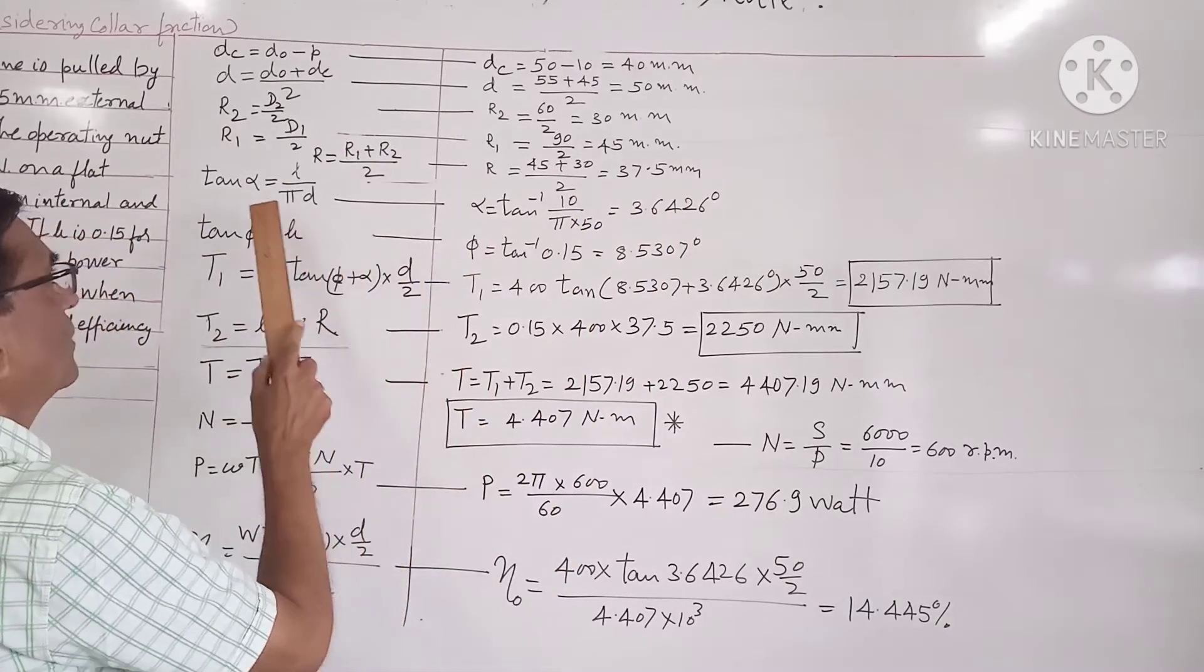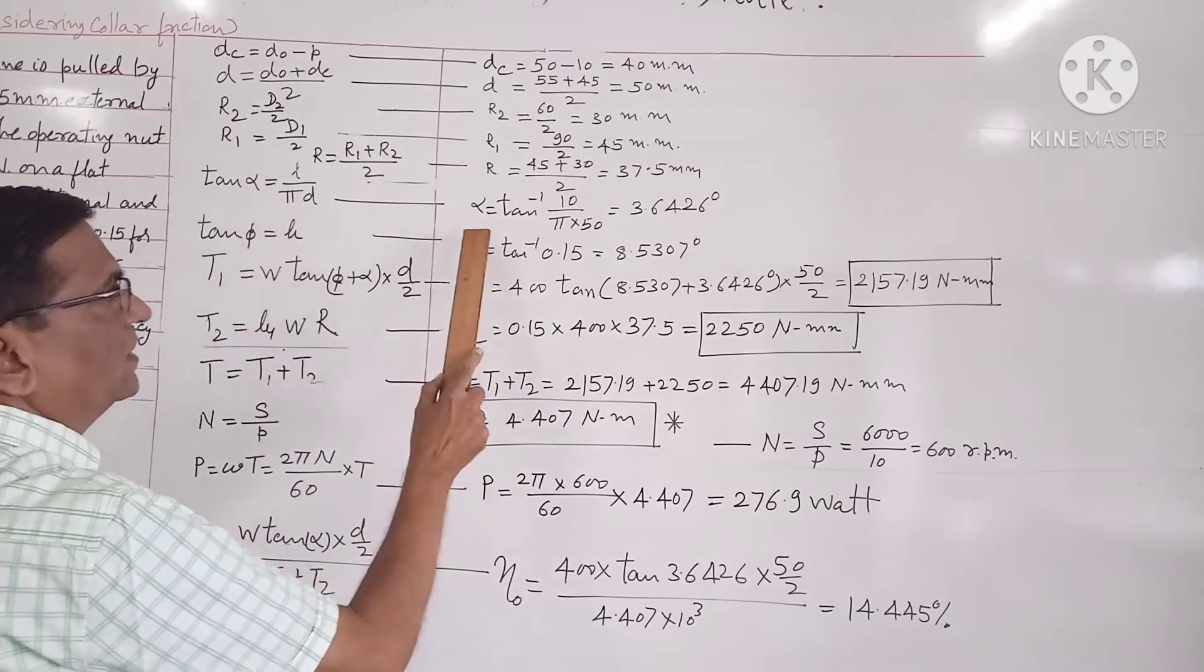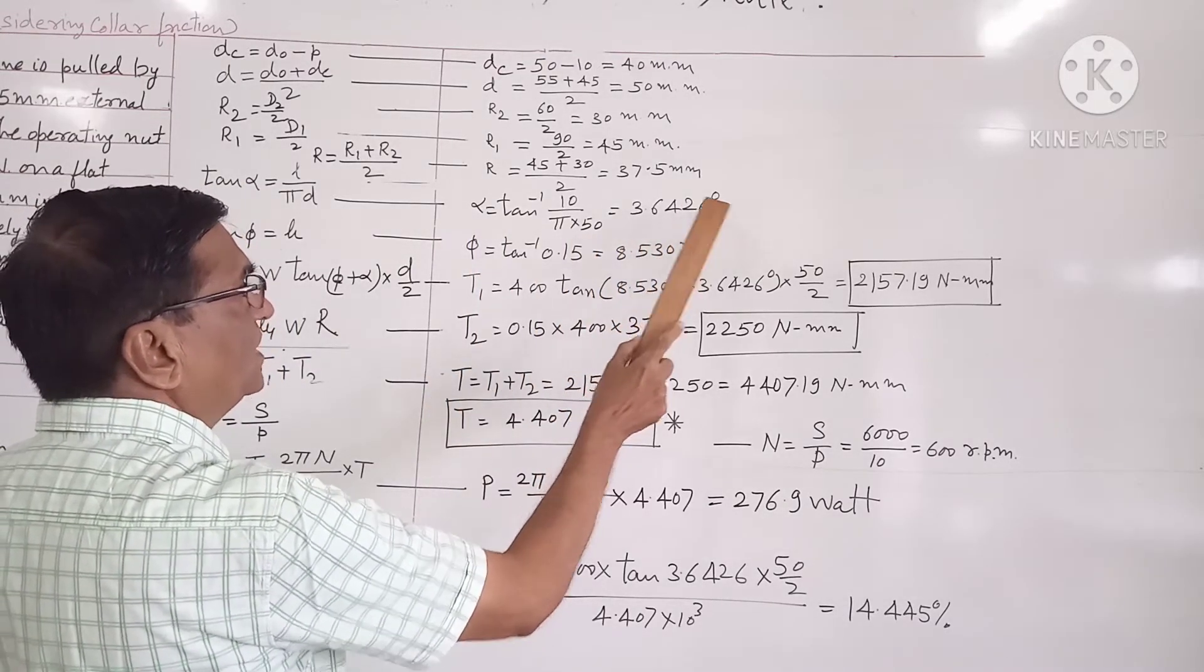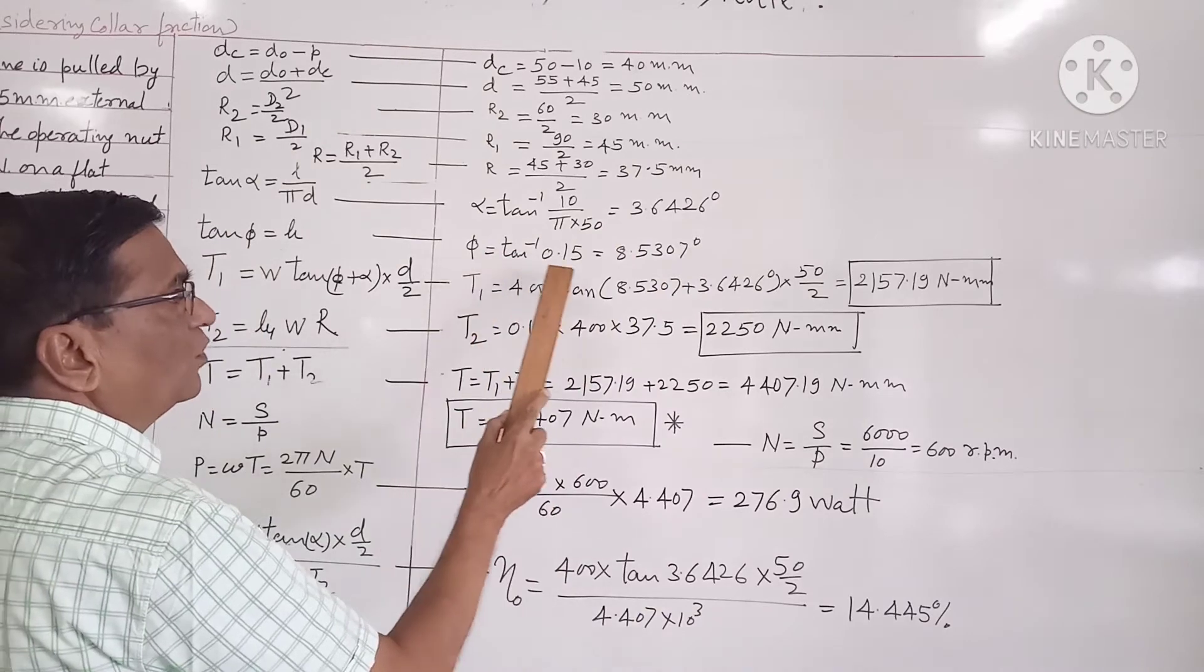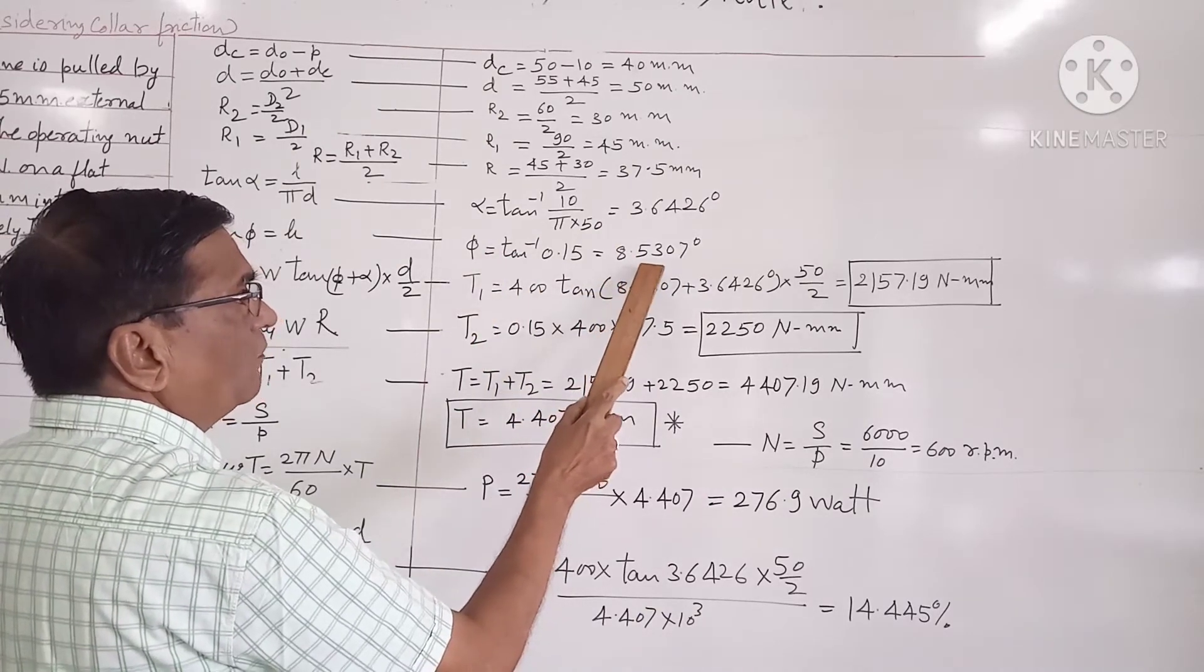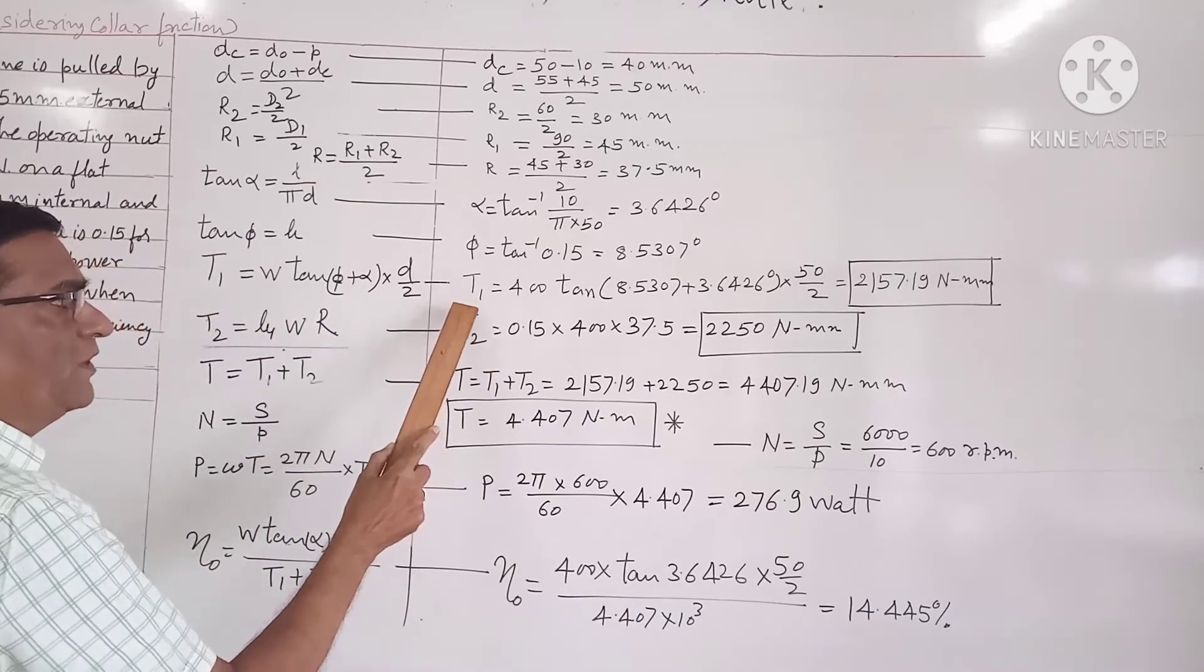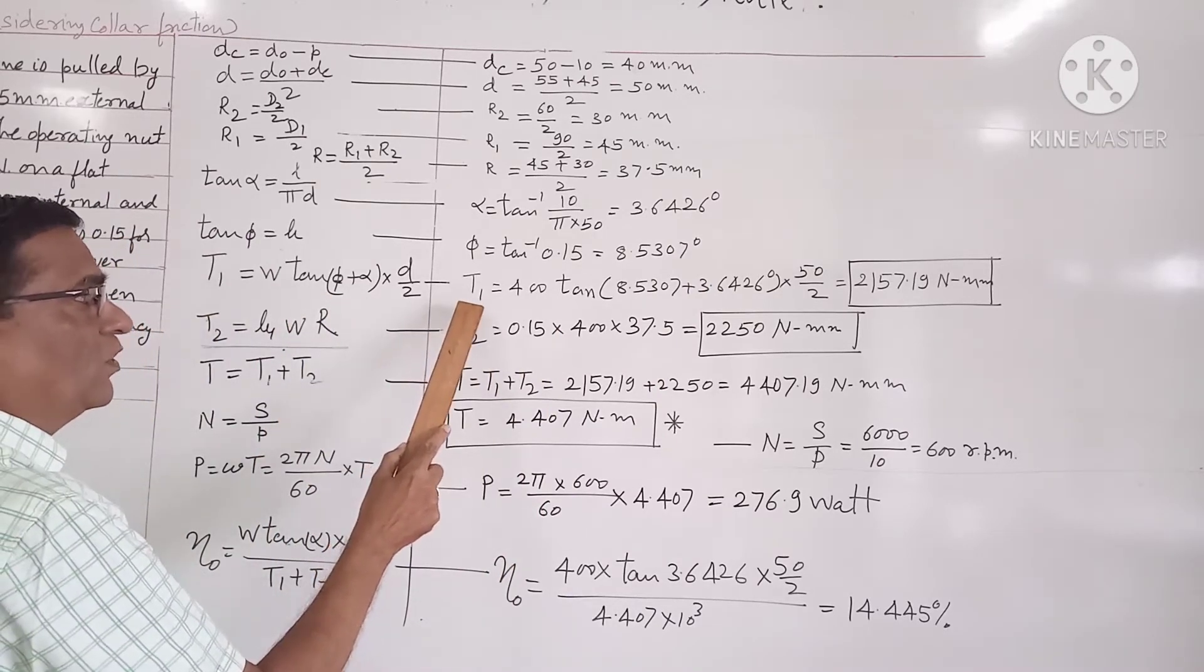Now we will calculate the value of alpha and phi from these equations. The value of alpha comes out to be 3.6426 degrees and the value of phi comes out to be 8.5307 degrees.